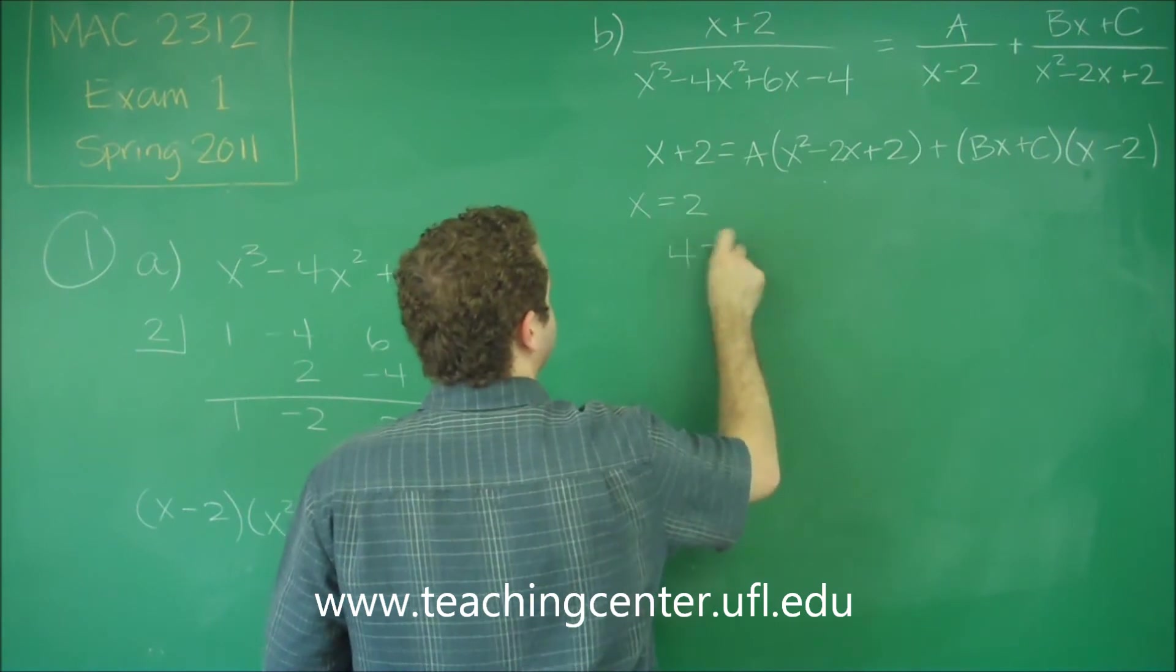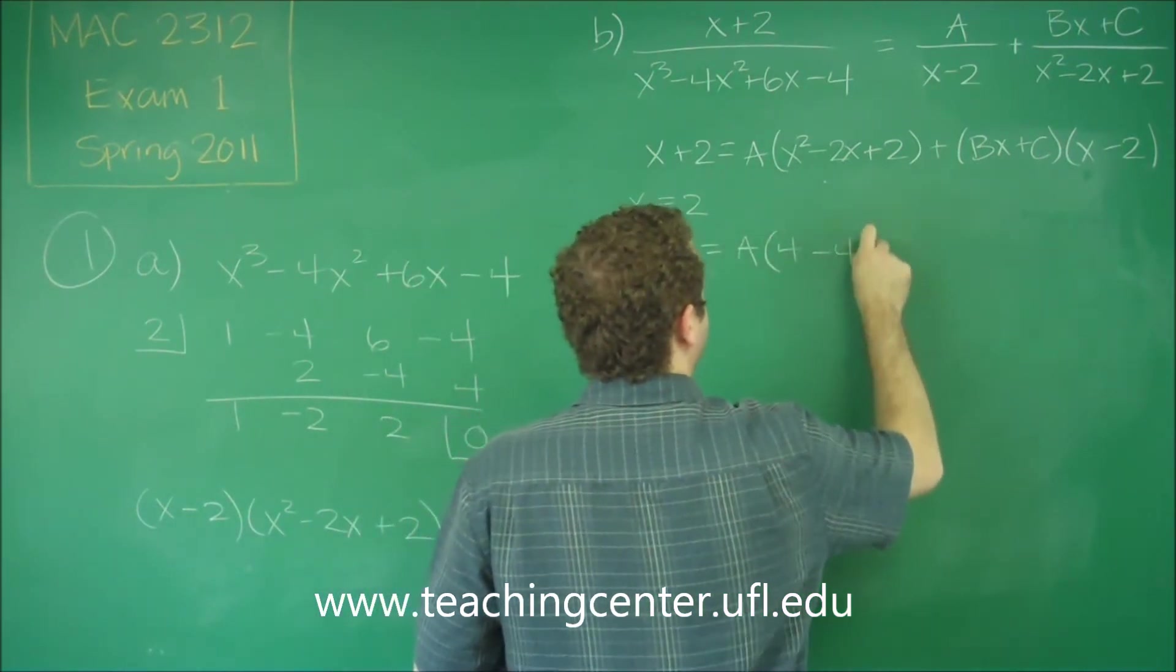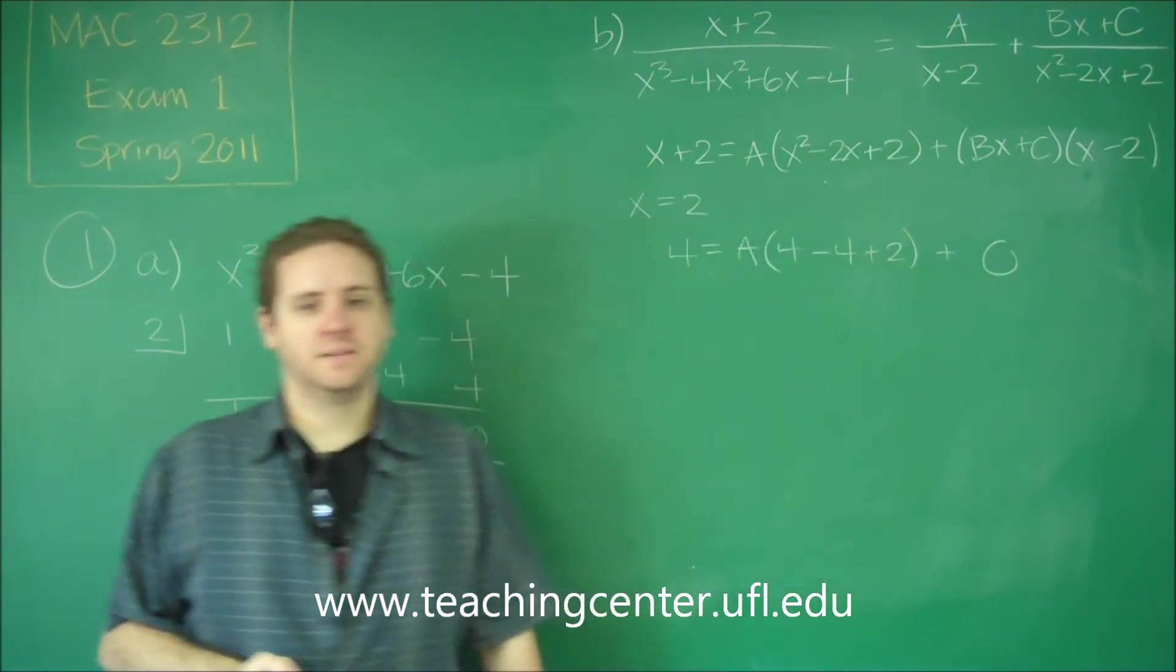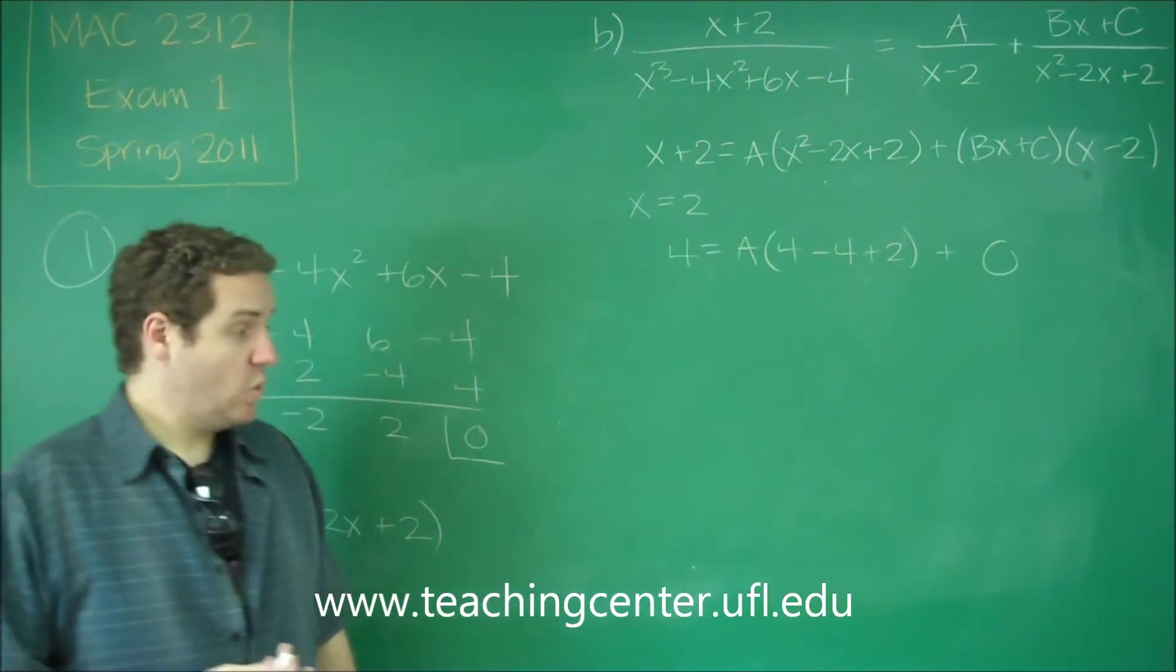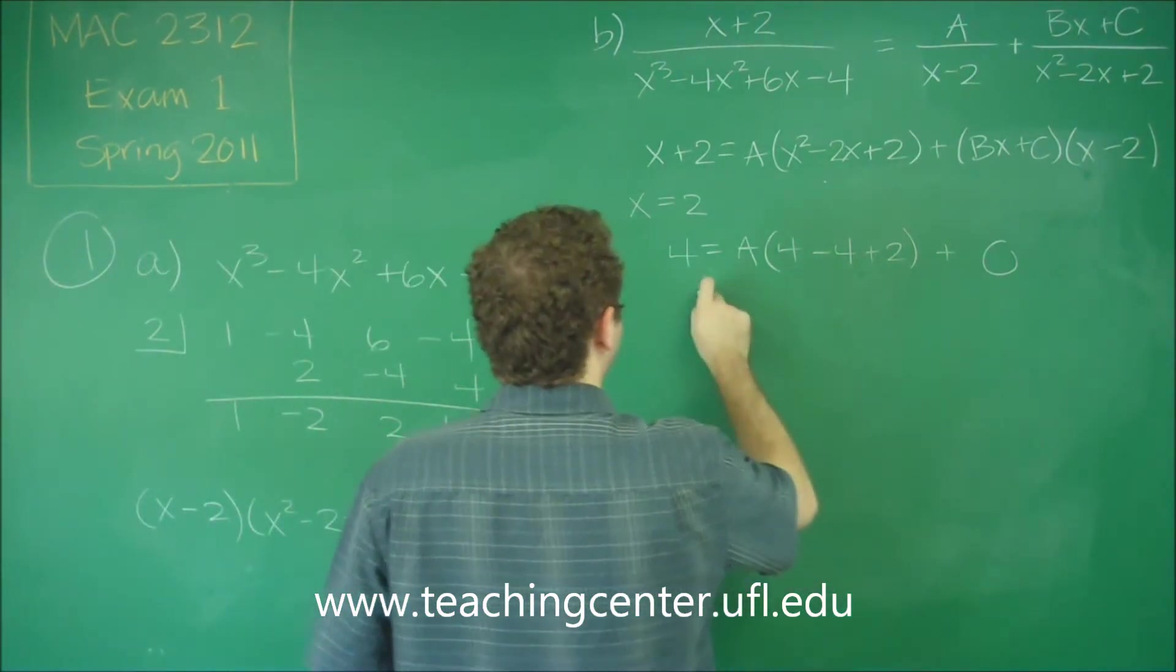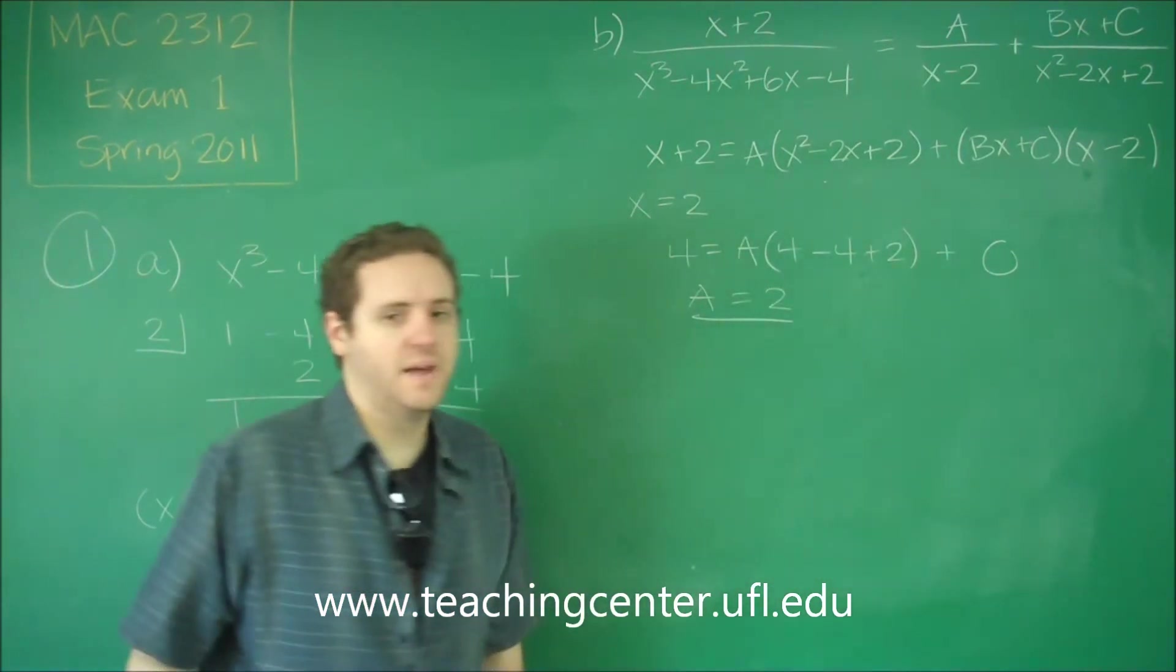Over here we get 4. Here we have 4 minus 4 plus 2. And our term on the right is all zero. We can definitely solve for A here. This is zero plus 2, 2A. 2A equals 4 means A equals 2.